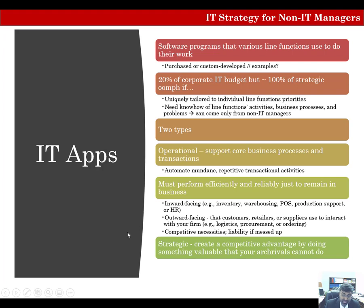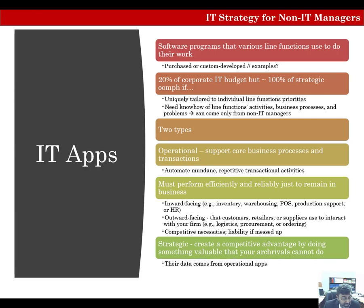A strategic app is something that creates a competitive advantage by doing something valuable that your rivals cannot. They introduce new ways for outsiders to interact with your firm, expand into new lines of business, and exploit proprietary data to help your firm, customers, and business partners make better decisions. Most data that strategic apps use comes from operational apps. Once rivals replicate a strategic app, it eventually becomes an operational app — a competitive necessity rather than a differentiator. A big part of IT strategy is making your value-producing IT apps harder to copy.